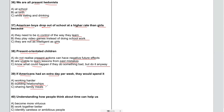For number 40: understanding how people think about time can help us become more virtuous, work together better, and identify careless or ambitious people. 'Virtuous' is specific. 'Work together' is specific. 'Identify people' is also specific.